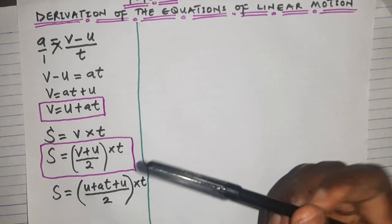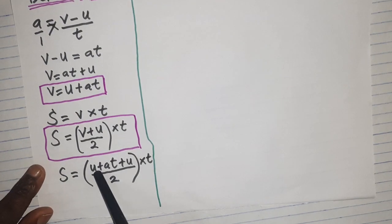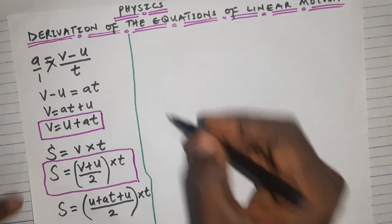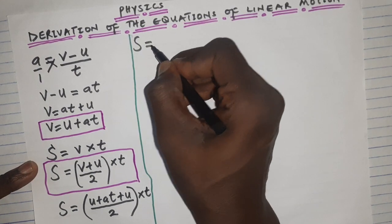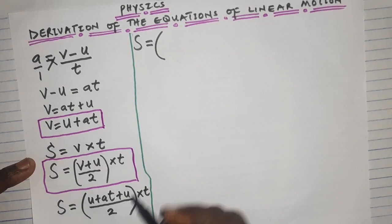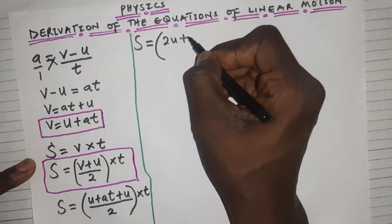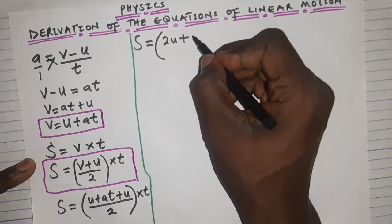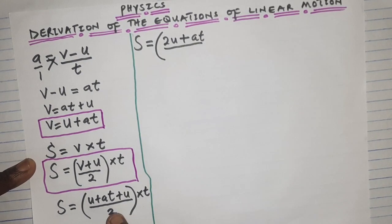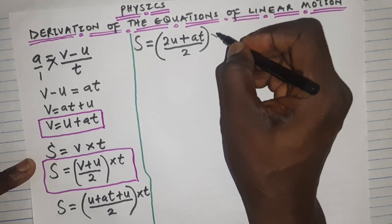Simplifying inside the bracket: u + u gives 2u, so we now have s = (2u + at) / 2 × t.